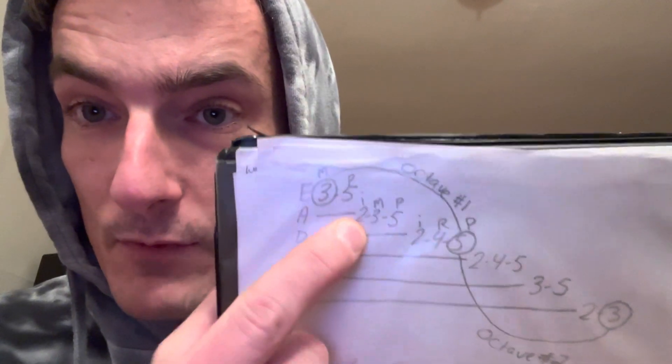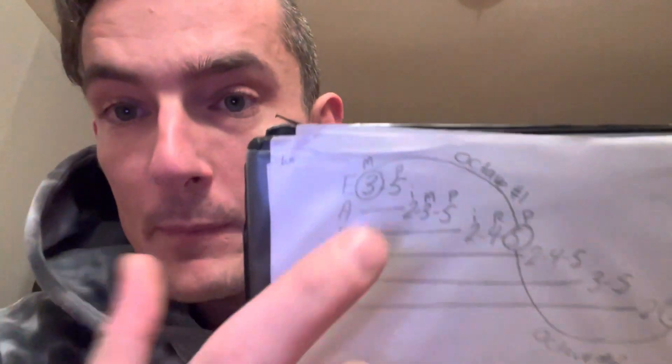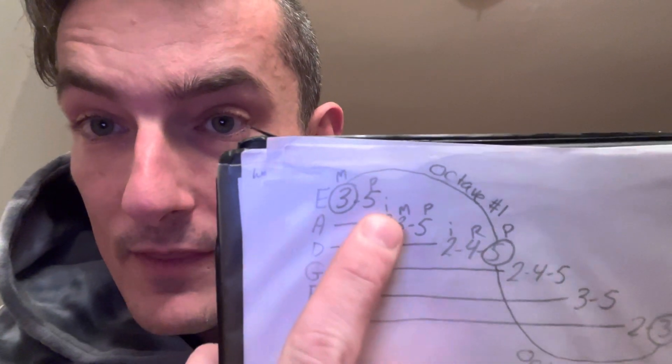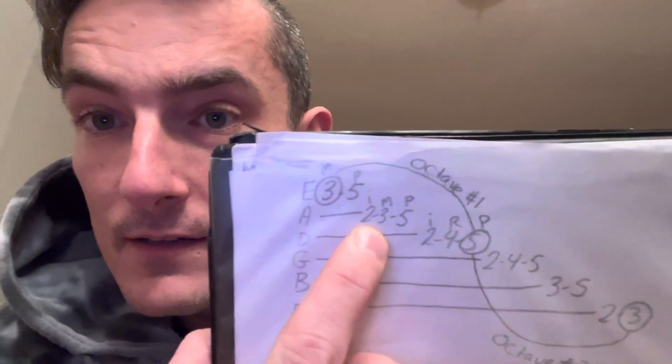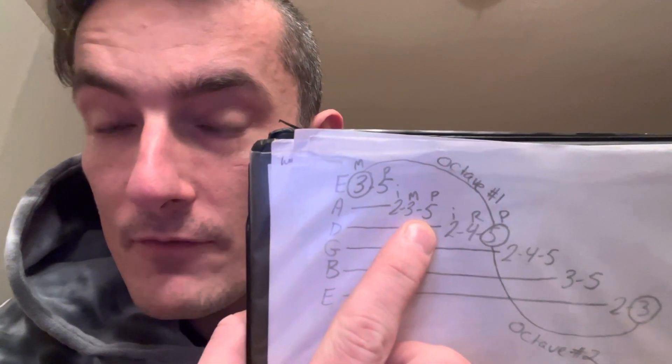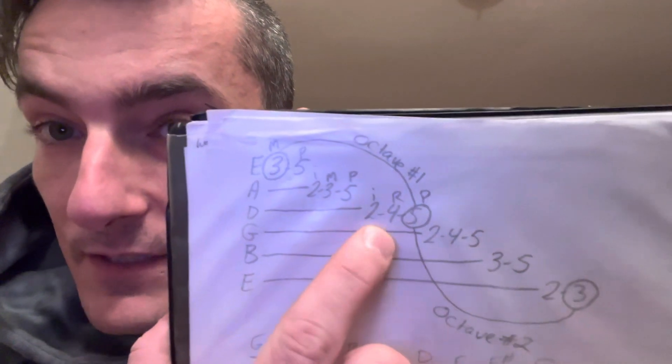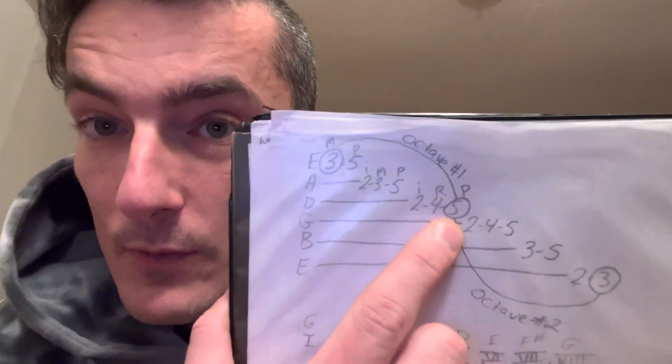So now we're on the A string and we play second fret with your index, third fret with your middle finger, fifth fret with your pinky. Then down on the D string, second fret with your index, fourth fret with your ring, fifth fret with your pinky.